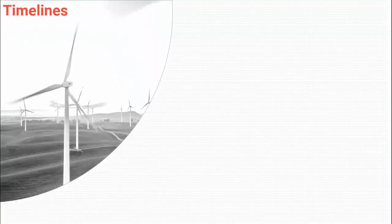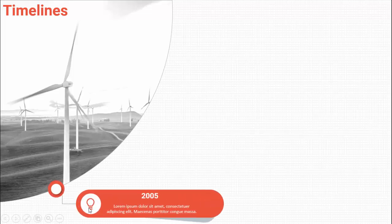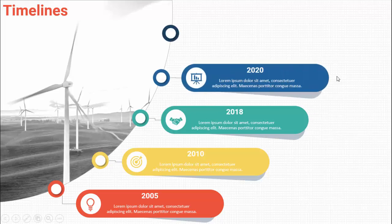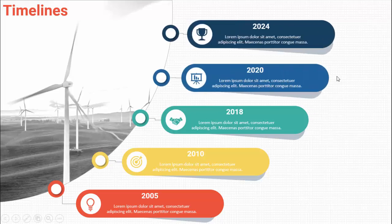In today's tutorial I'm going to show you how to create a five-step timeline slide in PowerPoint. Here's how the slide looks — I've added one image you can replace with your company image. When I click, the first timeline comes with an icon, detailed text, and a shadow effect. Then the next step appears: 2010, 2018, the fourth step, and the fifth step.